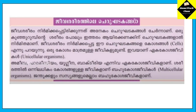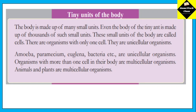This is the concept of cells. The body is made up of many small units. Even the body of the tiny ant is made up of thousands of such small units. These small units of the body are called cells — tiny units, we call them cells.